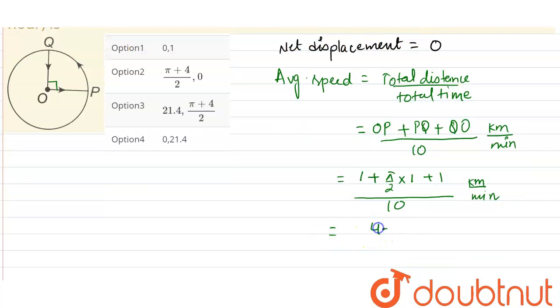So from here what we get is (4 + π) / 20 kilometer per minute.